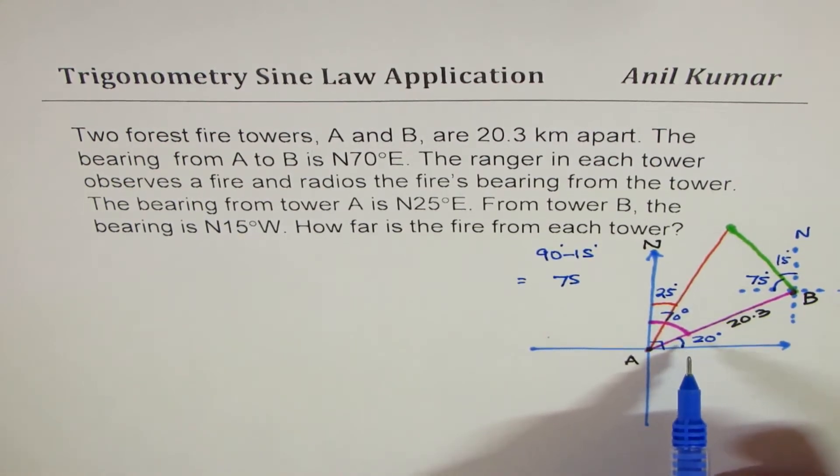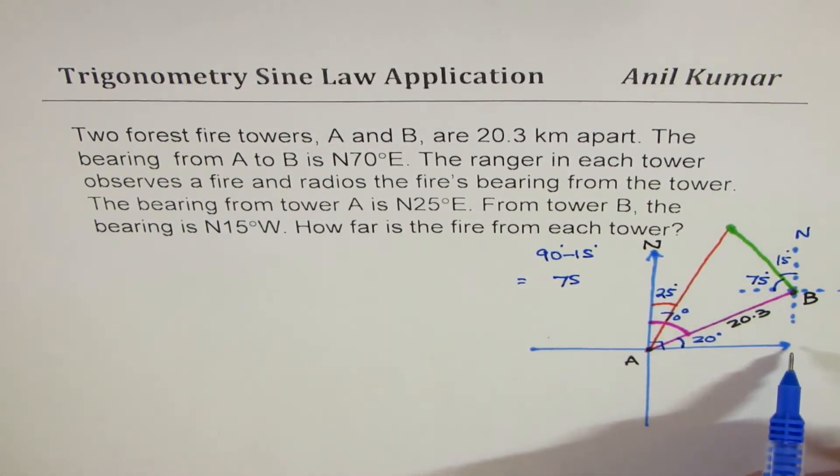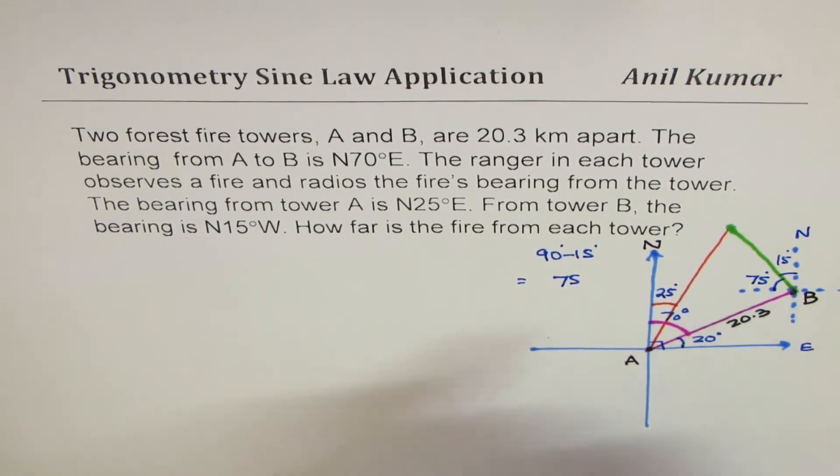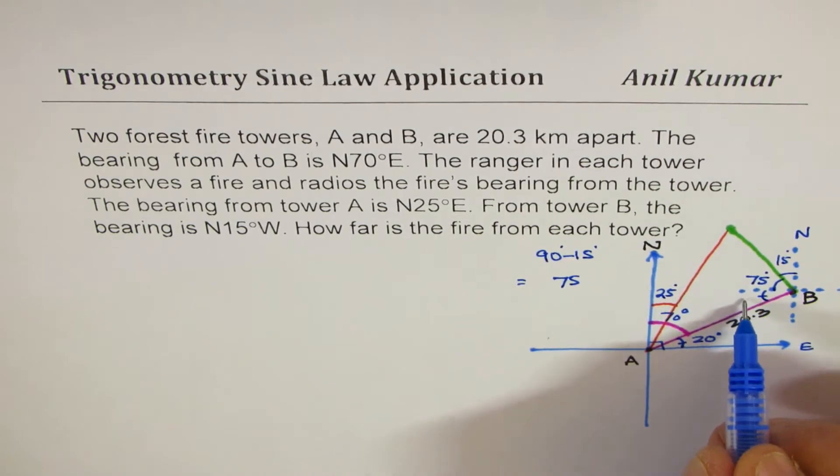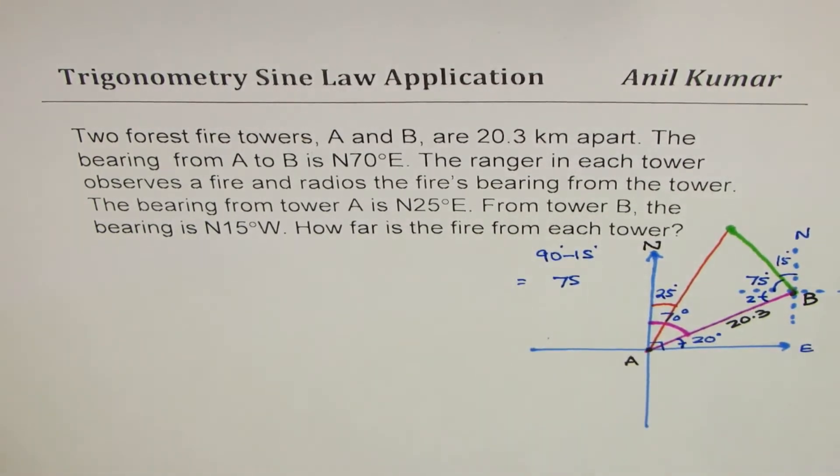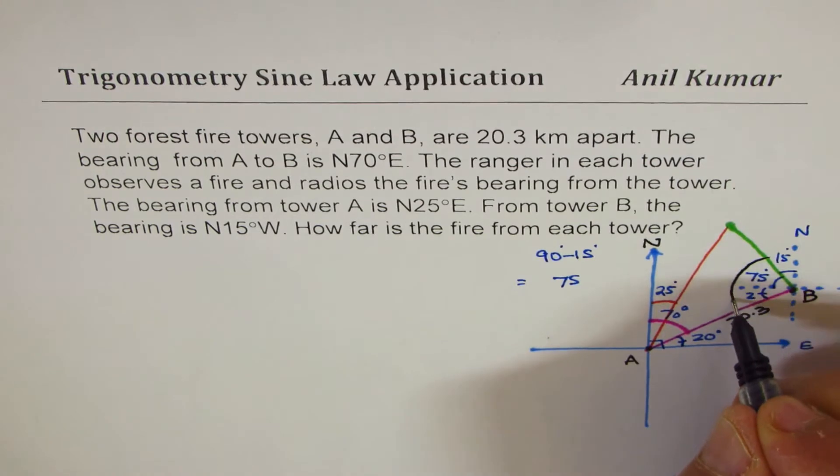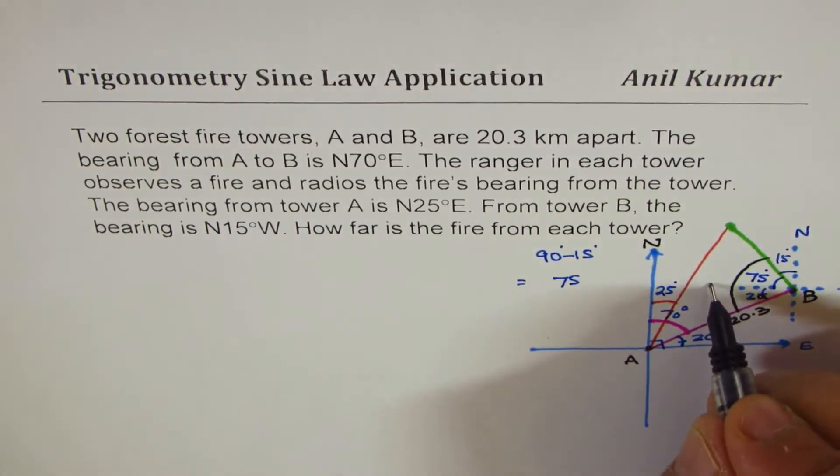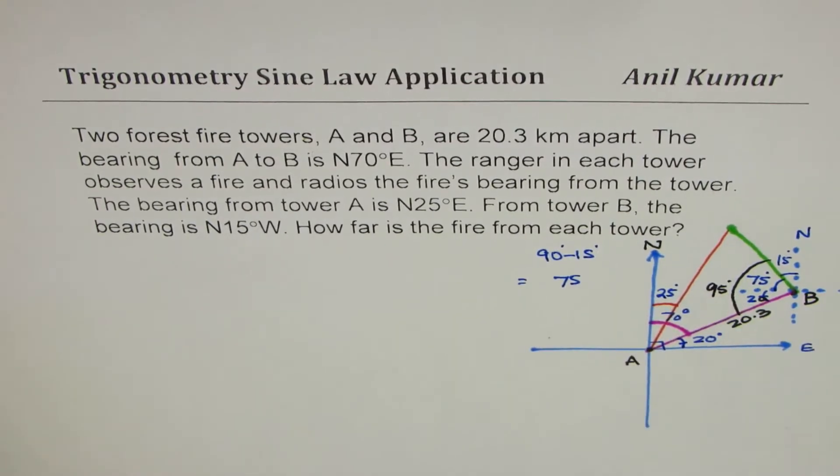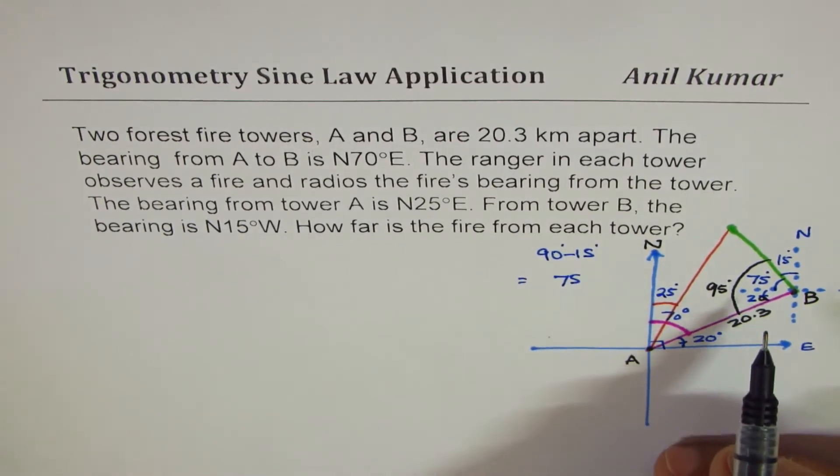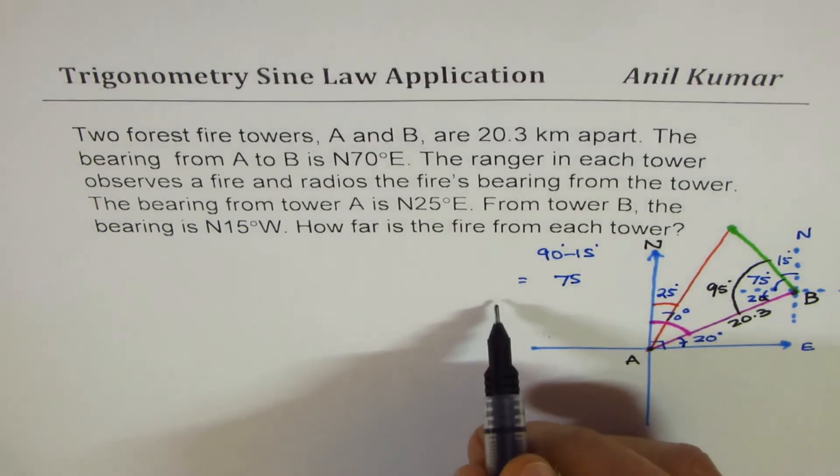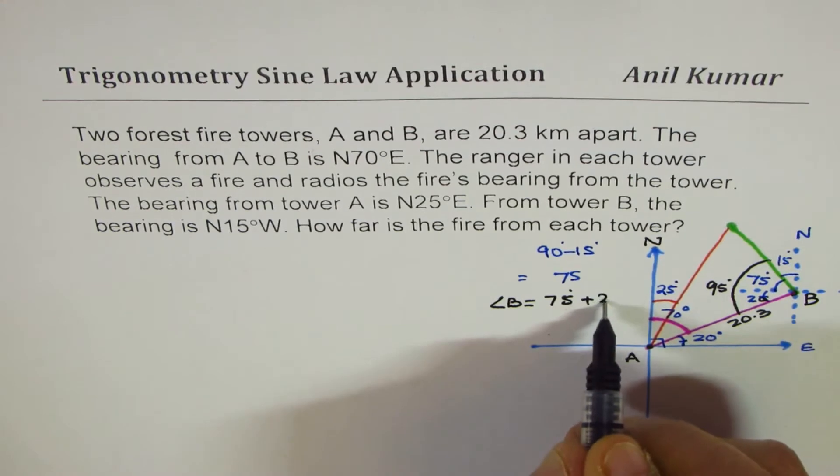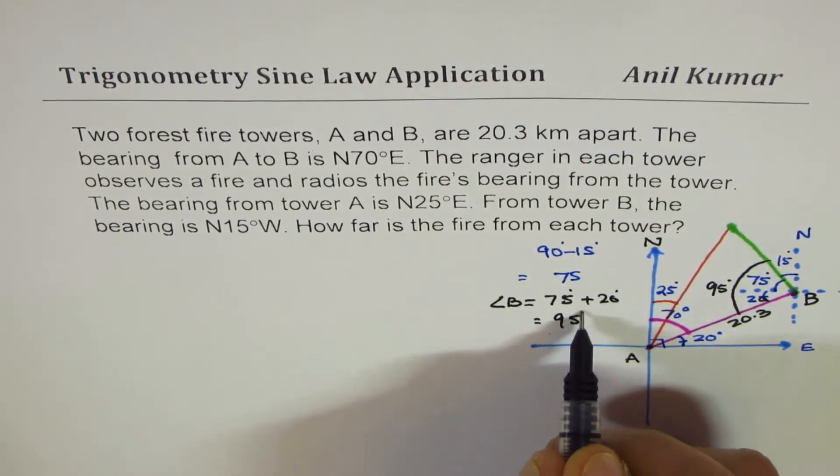Now since these two horizontal lines, the x-axis, you may say, or east, you may say, are parallel. So that will also be 20. And therefore, the total angle at B is going to be how much? 20 plus 75, which is 95 degrees. So we get that angle B is equal to 75 degrees plus 20 degrees, which is 95 degrees.